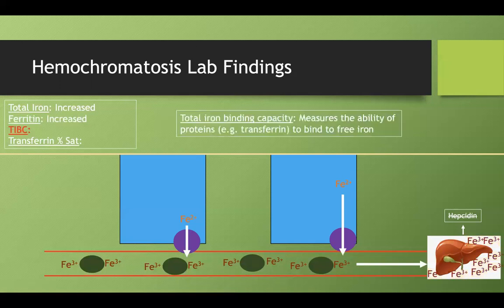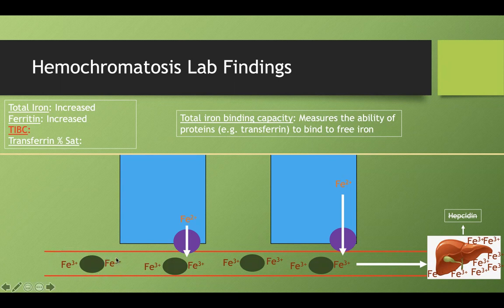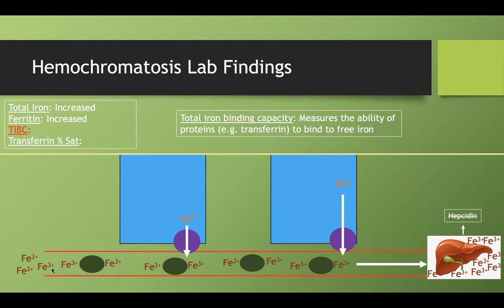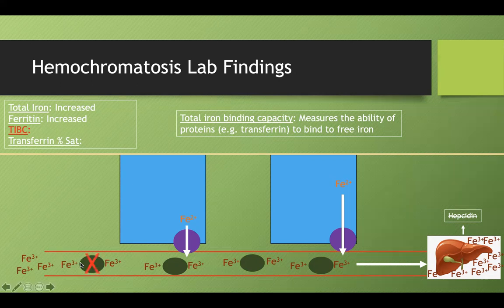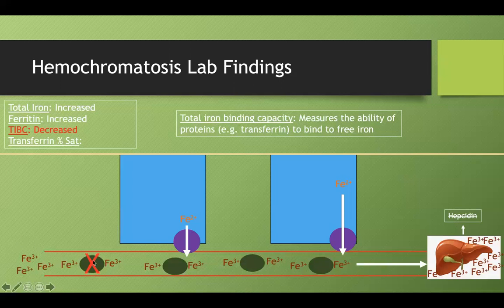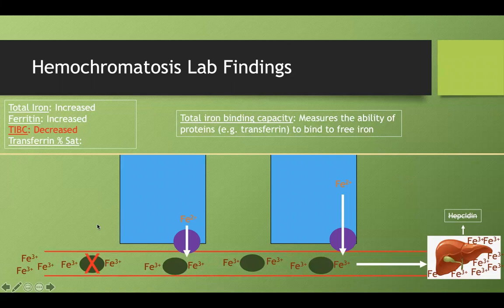Your total iron binding capacity measures your ability of proteins like transferrin to bind free iron. It's their capacity to bind free iron. Notice that in a condition with a ton of iron in your blood, that'll basically saturate all your transferrin molecules. So your ability to bind additional free iron molecules is going to be decreased because most of the sites that transferrin has are already bound by a ferric form of iron. So your TIBC will be decreased because these free ferric molecules don't have an ability to bind to these saturated transferrin molecules.